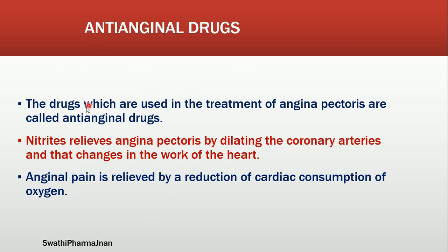Coming to anti-anginal drugs: the drugs which are used in the treatment of angina pectoris are called anti-anginal drugs. Nitrites usually relieve angina pectoris by dilating the coronary arteries. Because of deposition of atheroma in the intima of the arteries, there is obstruction in blood supply to the tissues. So we give nitrites or vasodilators which dilate the blood vessels and coronary arteries so that blood can pump fast to the tissues. Anginal pain is also relieved by reduction of cardiac consumption of oxygen.